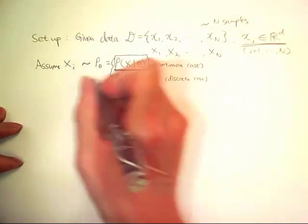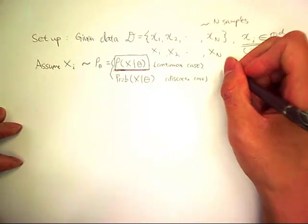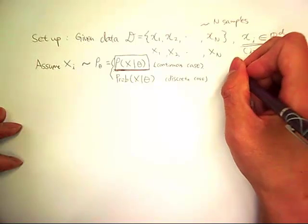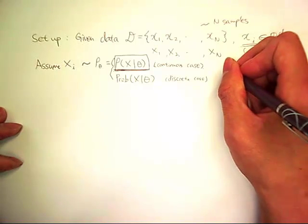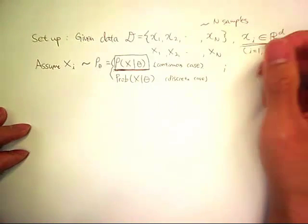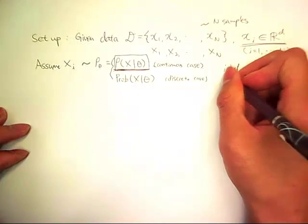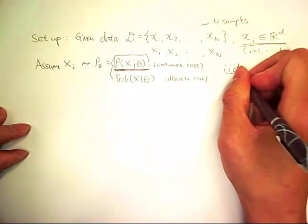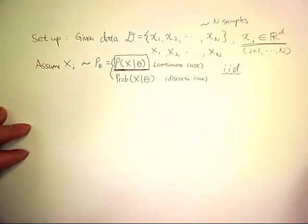There's an assumption that each x sub i is independently drawn from the same distribution. So it's the so-called IID, independent and identically distributed.